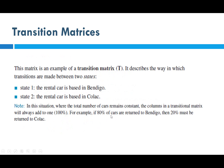We denote the transition matrix as capital T. It describes movement between two states: state one being the rental car based in Bendigo, and state two the rental car based in Colac. In this situation where the total number of cars remains constant, the columns in the transition matrix need to add to 100%.